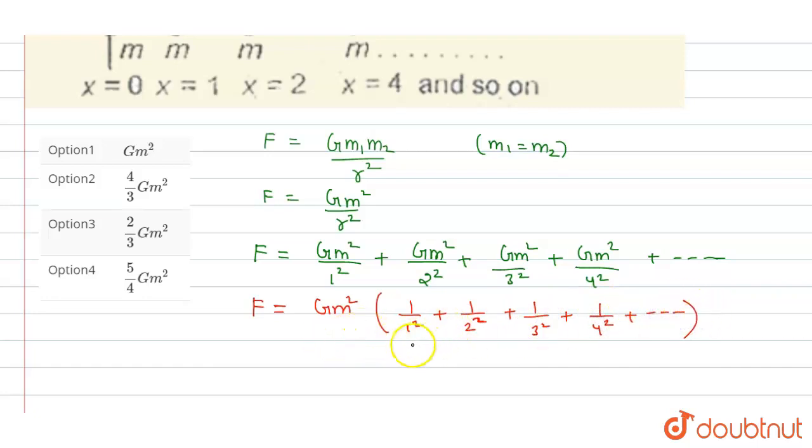So this will reduce into G m squared times 4 by 3.